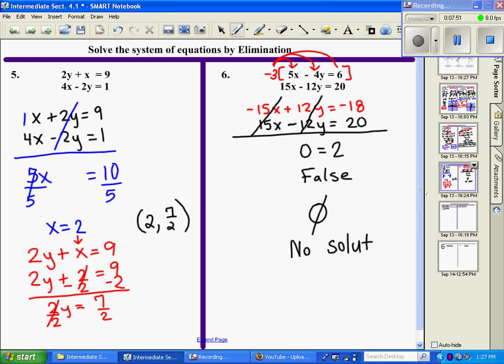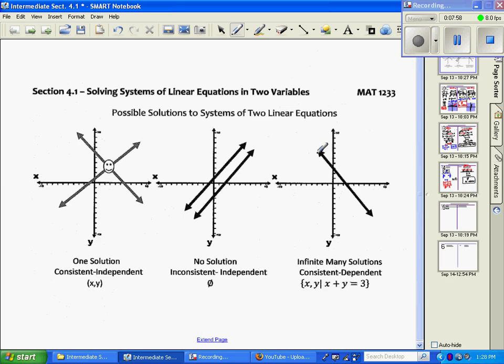Now, if I think back to what a graph of a no solution looks like, I'll remember that that's when we had the parallel lines and we got no solution. So this is what the picture of it would be, and this is the algebra behind it.